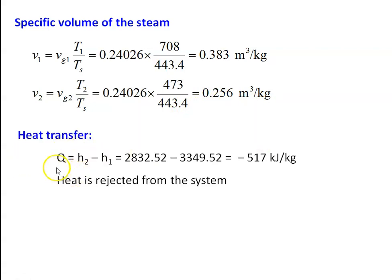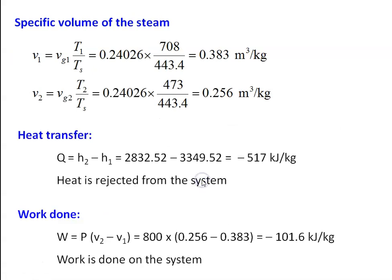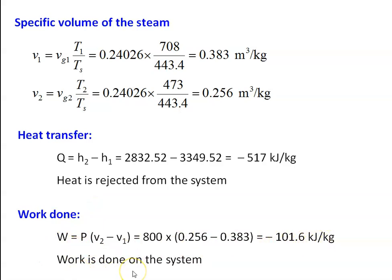Heat transfer Q = H2 − H1 = 2832.52 − 3349.52 = −517 kJ/kg. Heat is rejected from the system. Work transfer W = P×(V2−V1) = 800×(0.256−0.383) = −101.6 kJ/kg. Work is done on the system. Summary: heat transfer is −517 kJ/kg (rejected from system); work transfer is −101.6 kJ/kg (done on system).